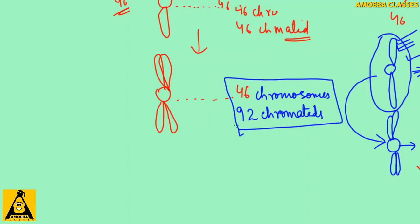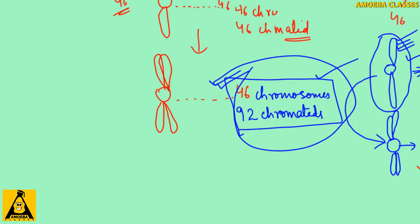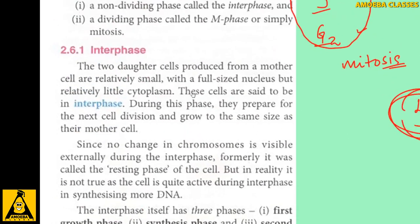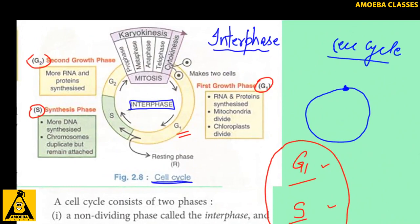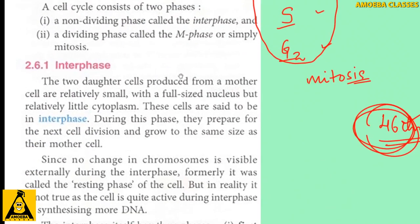Understanding this basic concept is important for enjoying the next video, which will be more complex. To summarize: interphase is a non-dividing phase in which there is replication of DNA — the 46 chromatids become 92 chromatids. The next lecture will cover the dividing phase, also called M phase or mitotic phase.